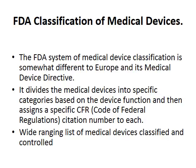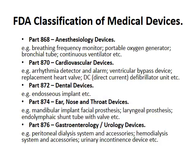The FDA divides medical devices into specific categories based on their function, and they're assigned a specific CFR, or Code of Federal Regulations, citation number. There's a wide range of medical devices classified and controlled, so unlike the Medical Device Directive, companies need to check the CFR and find their device. There are about 16 different device categories, found in parts 868, 870, 872, etc.